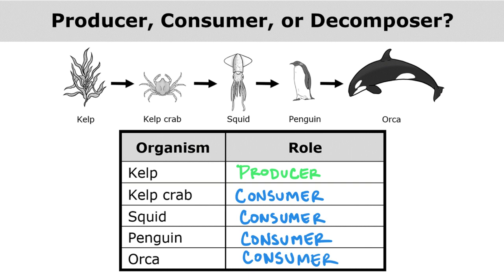It may look weird to have 'consumer' almost all the way down the table, but it's very common to only show consumers in a food chain and not necessarily put a decomposer into a food chain. You will have decomposers in the ecosystem — we just don't always put them in our food chains or webs.